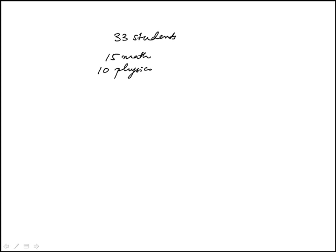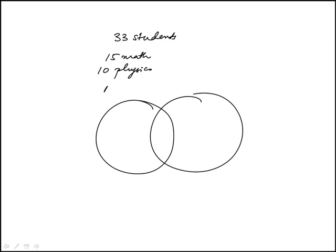5 are enrolled in both mathematics and physics courses. So this is a Venn diagram problem, anytime you see an overlap. Math, physics, total is 33 students, and there may be some that are enrolled in neither.